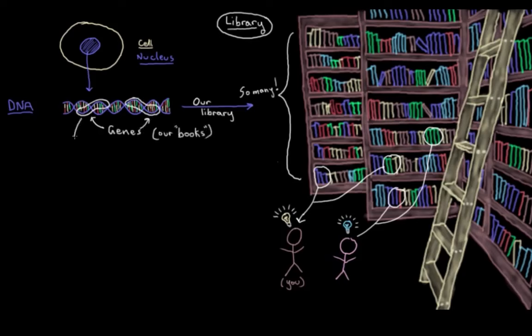And genes give our cells specific instructions on how to make different kinds of proteins. And having different proteins around, well that changes the way our cells look and it changes the way our cells act. So it gives our cells really different abilities.